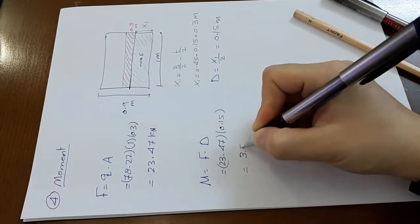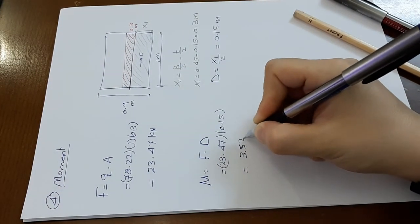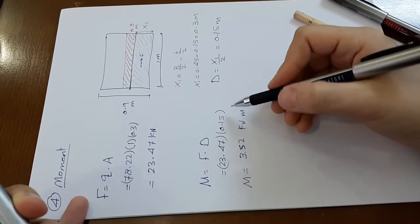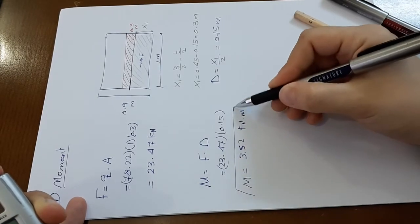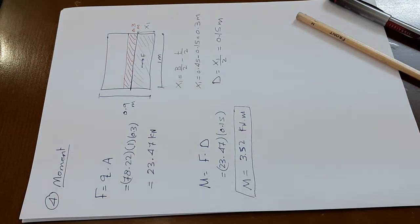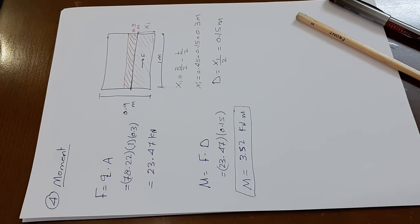This gives 3.52 kN-meter. This is the moment value needed to compute the main reinforcement or short reinforcement for the wall footing.